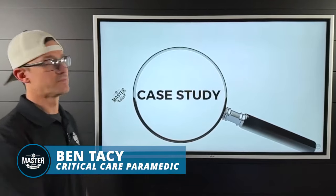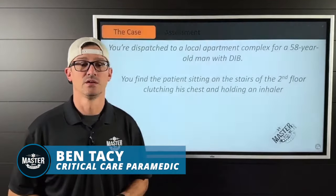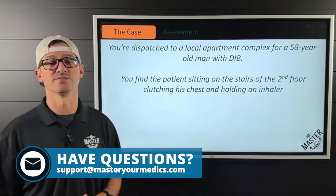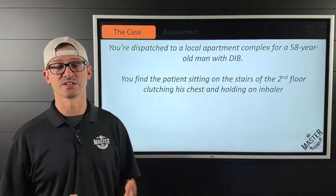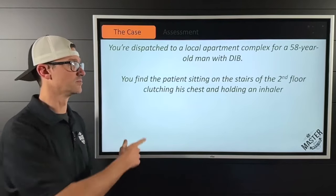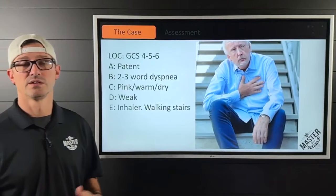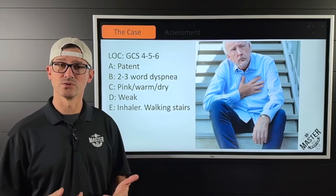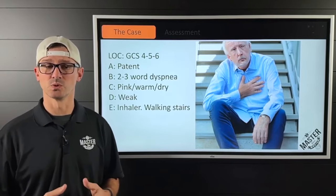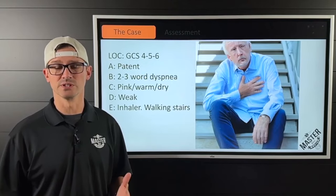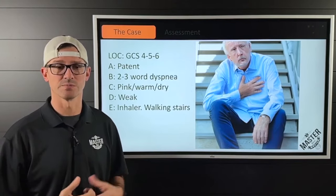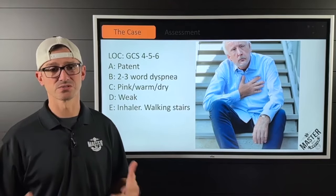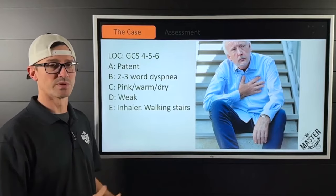Let's get into this case study. You're dispatched to a local apartment complex for a 50-year-old man with difficulty breathing. You find the patient sitting on the stairs of the second floor, clutching his chest and holding his inhaler. He has a GCS of 4-5-6. His airway is patent but he's short of breath, speaking in two to three-word dyspnea. He was having a difficult time and couldn't make it all the way up the stairs, becoming very weak and short of breath.